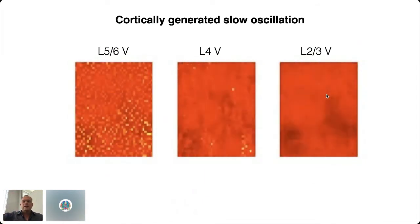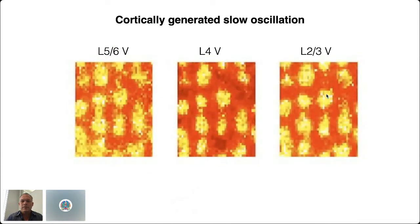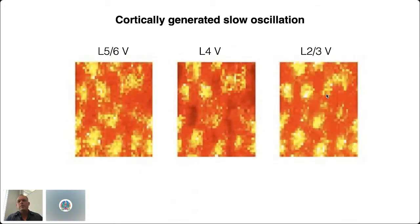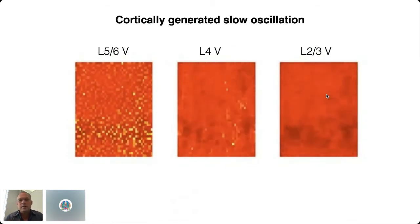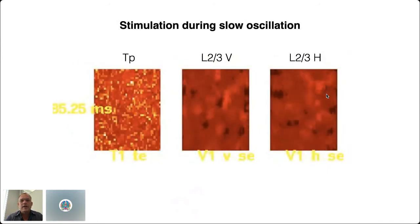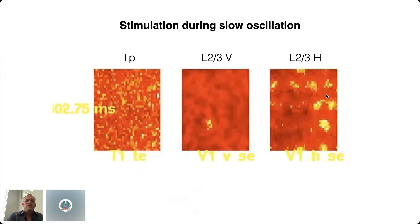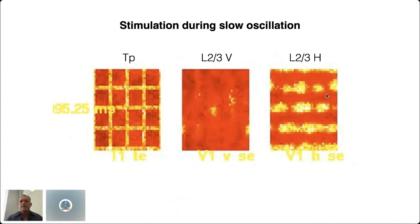At the mini-column level, you see these upstates — periods of firing — gradually synchronizing across multiple different mini-columns and then becoming silent altogether, producing the cortically generated slow oscillation. If you look at stimulation during this slow oscillation by applying a plaid stimulus, you no longer get a clearly defined response — you really get a very noisy response to the stimulation. You don't get a clear separation of features as before; the precision is overwhelmed by the noise generated by the upstate.